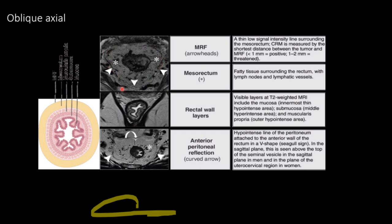CRM is measured by the shortest distance between the tumor and the mesorectal fascia. The anterior peritoneal reflection is a hypointense line of the peritoneum attached to the anterior wall of the rectum in a V-shape, resembling a seagull. In the sagittal plane, this is seen above the top of the seminal vesicles in men and at the level of the uterocervical region in women.